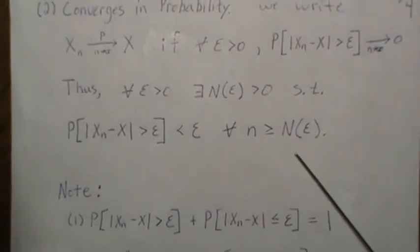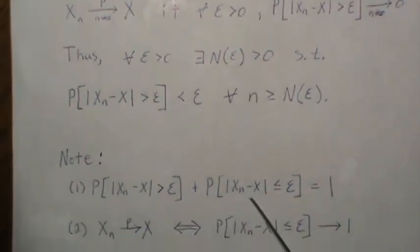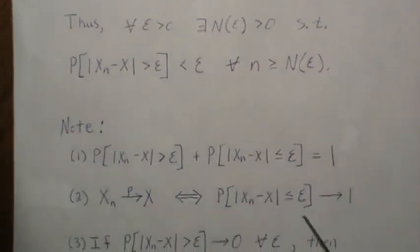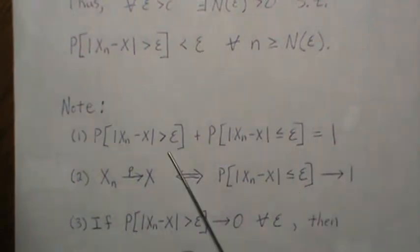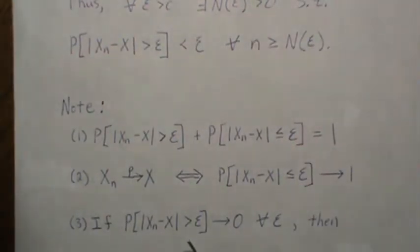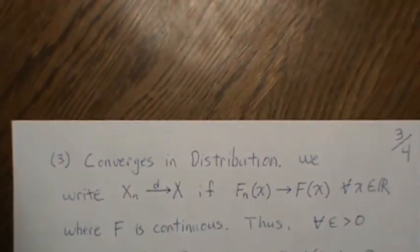Note that since P(|X_n - X| > ε) + P(|X_n - X| ≤ ε) = 1, if X_n converges in probability then P(|X_n - X| > ε) → 0, which means P(|X_n - X| ≤ ε) → 1. These are equivalent definitions. Also note that if X_n converges in probability to X for all ε, then it also converges in probability with the ≥ sign included.